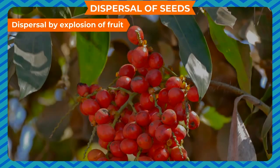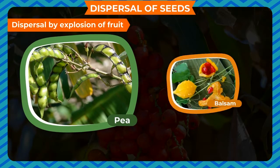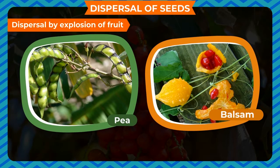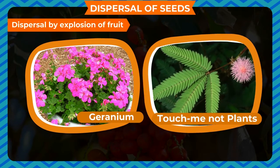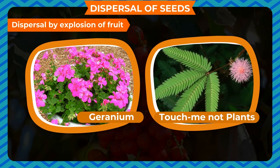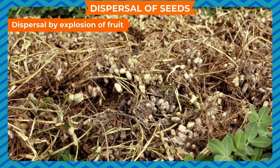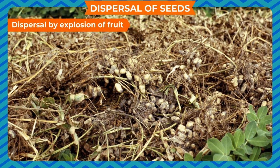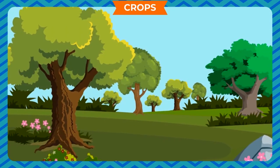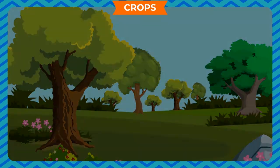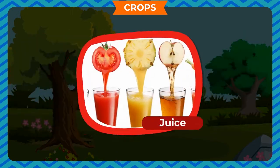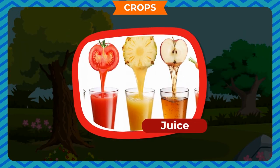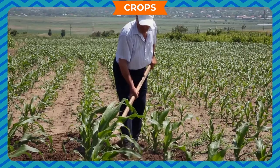Dispersal by explosion of fruit: some fruits like pea, balsam, geranium, and touch-me-not plants explode on drying and their seeds are scattered away from the parent plants.